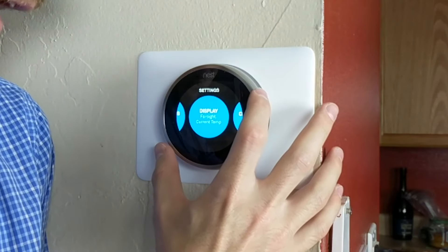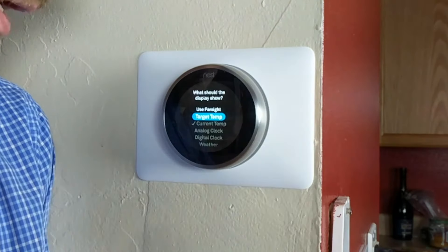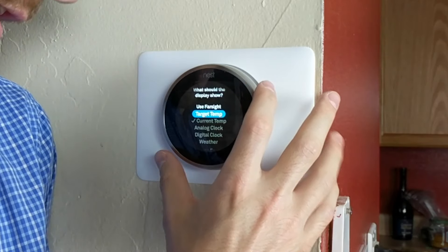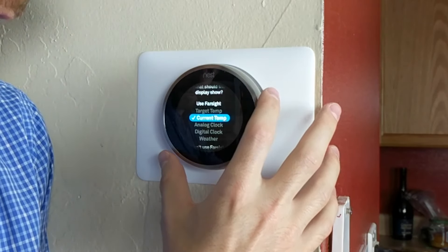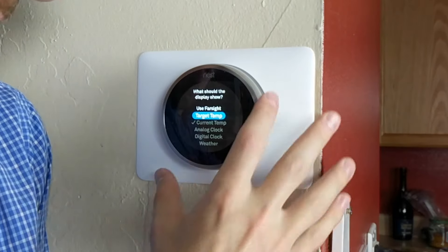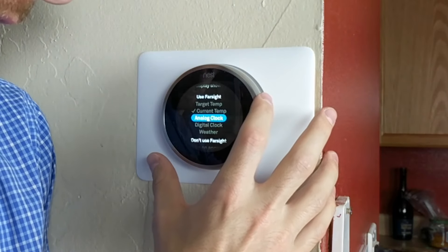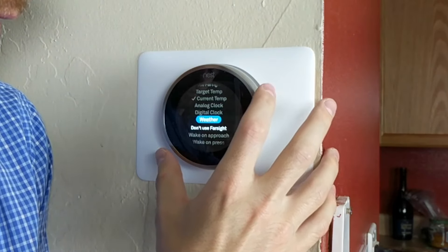You can change the far sight display, which is the information that's going to be shown on your thermostat if you walk past it. We have it set to the current temperature. You can set it to the target temperature for any given moment, the time either analog or digital, or the weather.